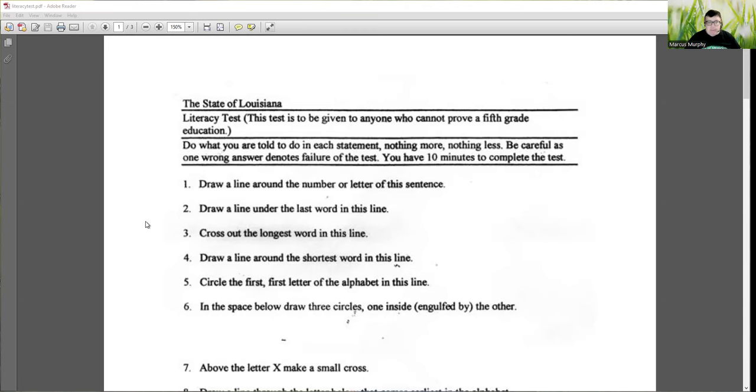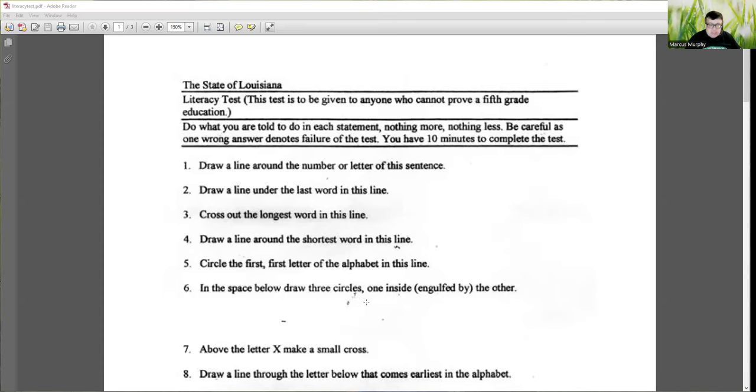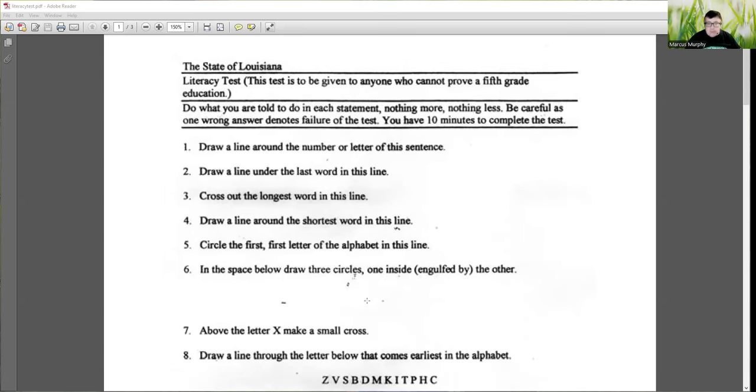Draw a line around the shortest word in this line. Circle the first, first letter of the alphabet in this line. I love that, circle the first, first letter. I think saying once would have been enough. In this place below, draw three circles, one inside engulfed by the others. Time wasting basically, drawing the circles takes time.